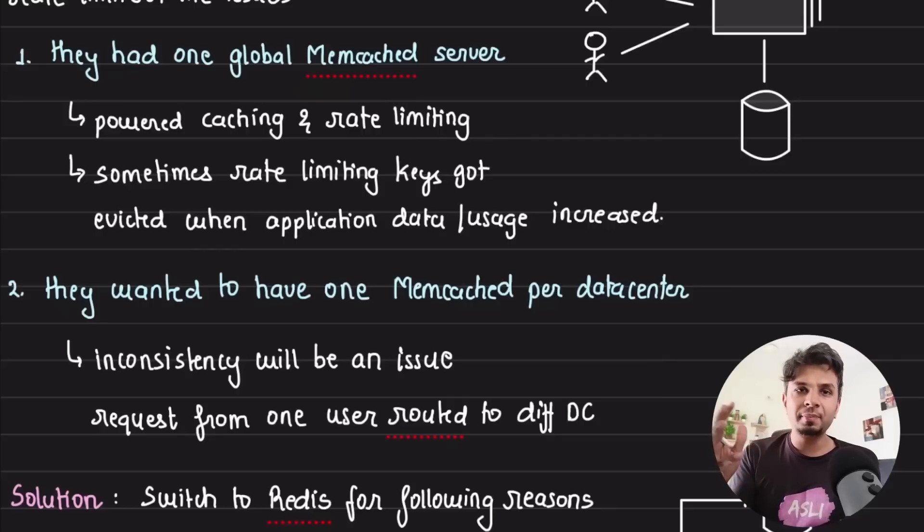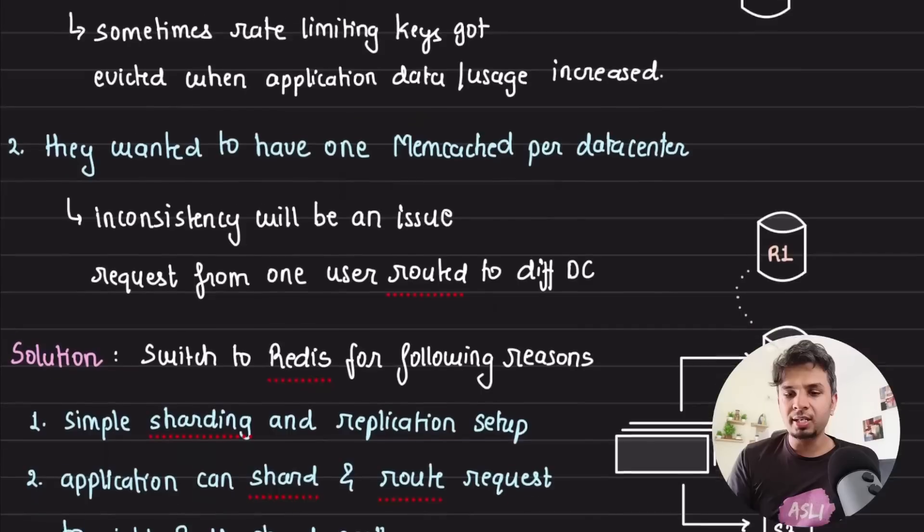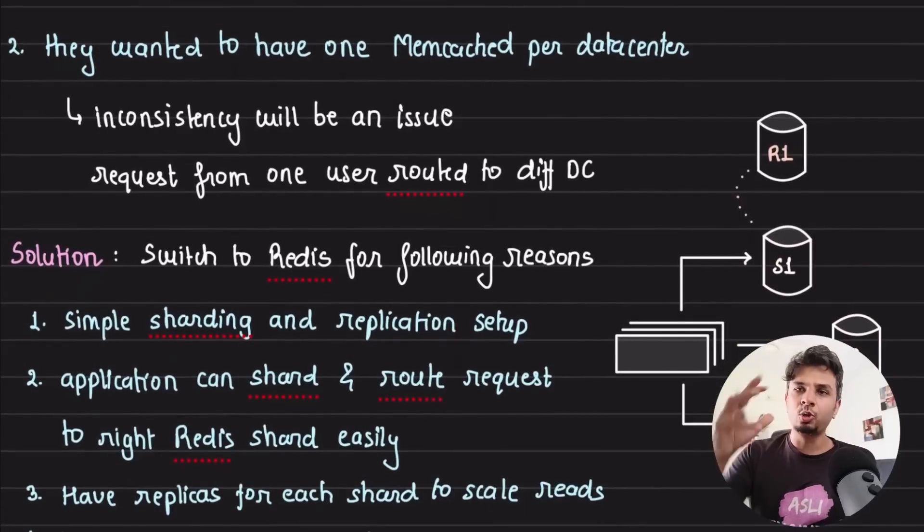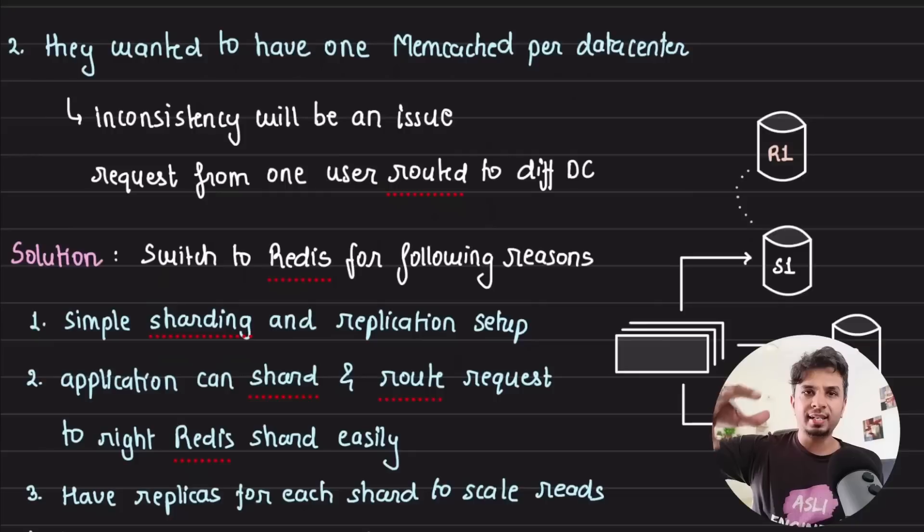This would lead to a lot of discrepancies and inconsistencies in the user experience. So this was problem number one. Another problem is they wanted to move out of a single data center. Initially, when GitHub started, a lot of stuff was present in a single data center, and as they scaled, their stuff moved across multiple data centers.